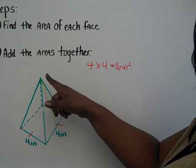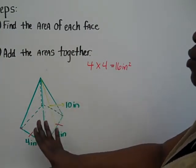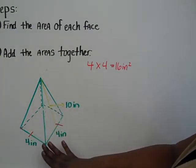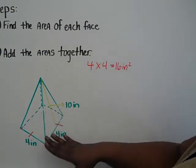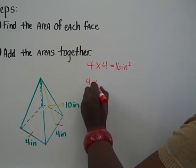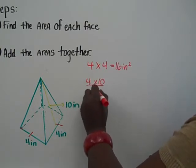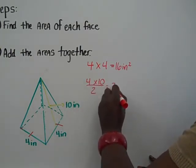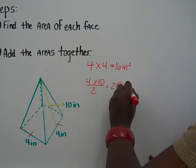Now, this is a pyramid, which means the lateral faces are triangles. We've talked about how to find area of a triangle, so we should be familiar with that. So if you look at this triangle, the base is 4, the height is 10. We will divide that 40 by 2 to get 20 inches squared.